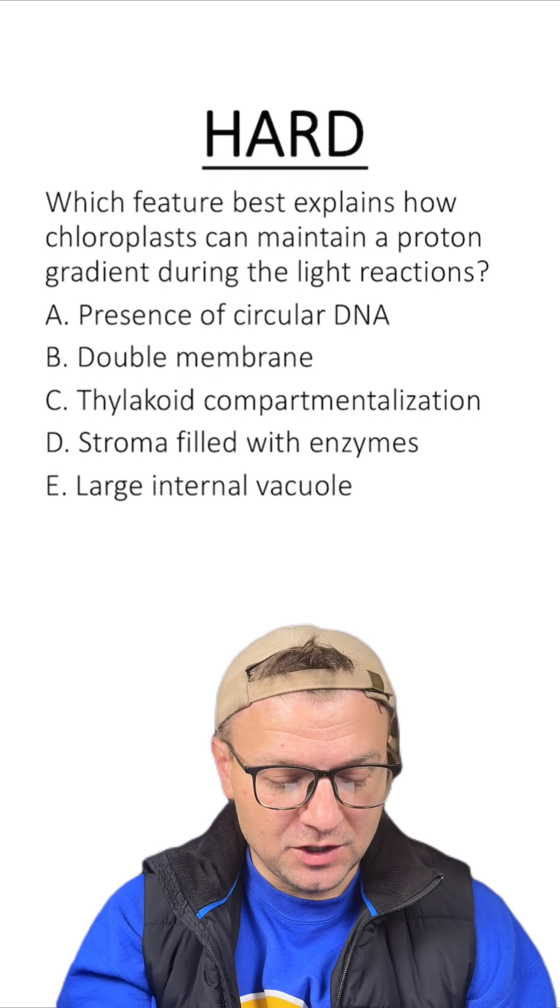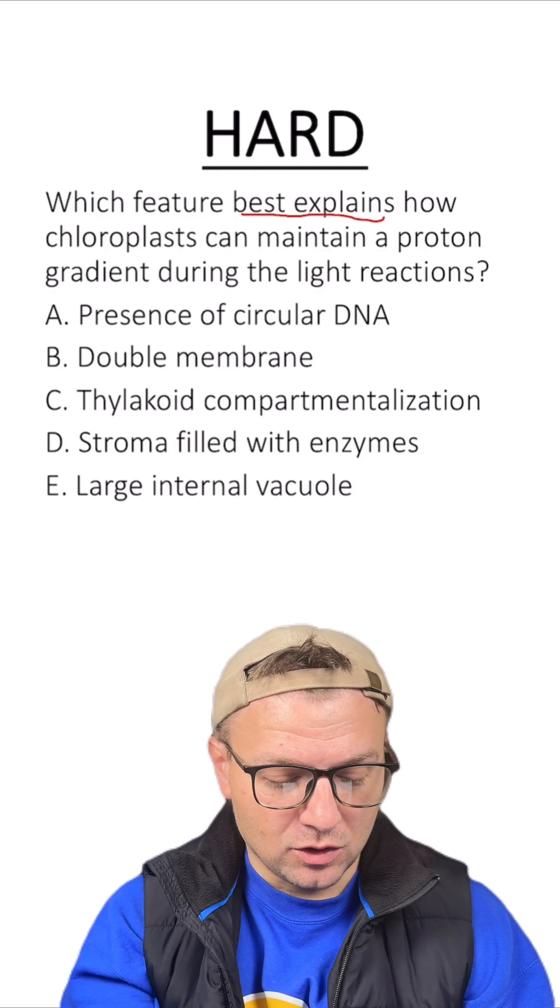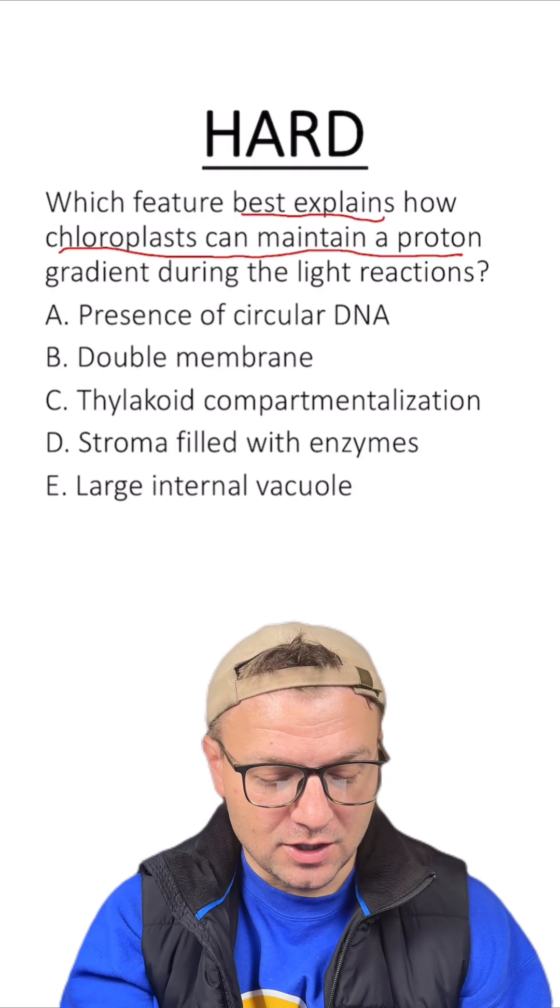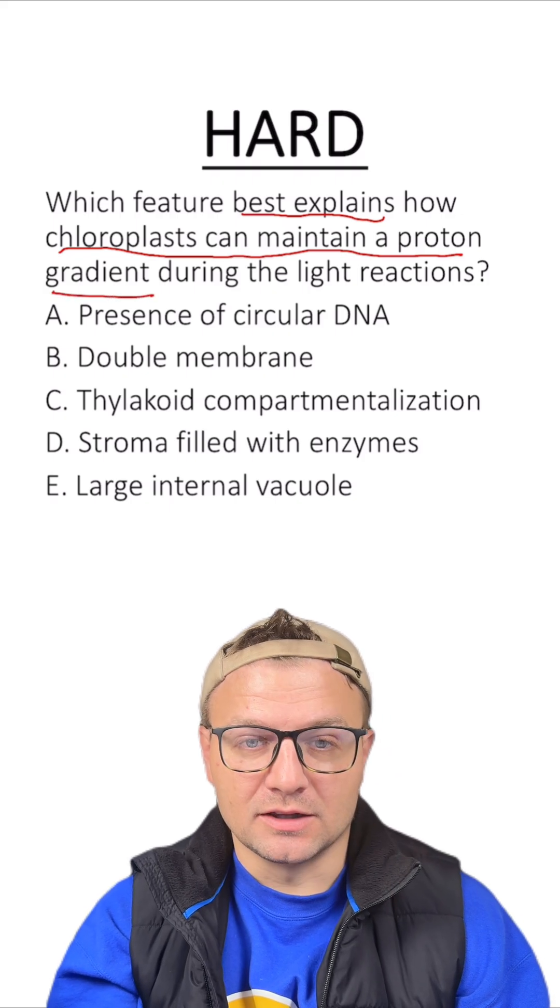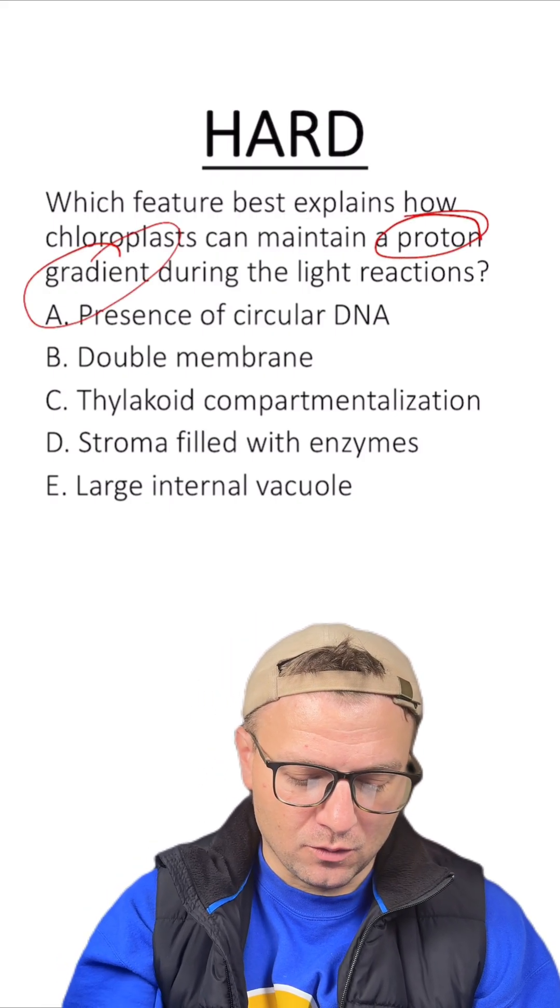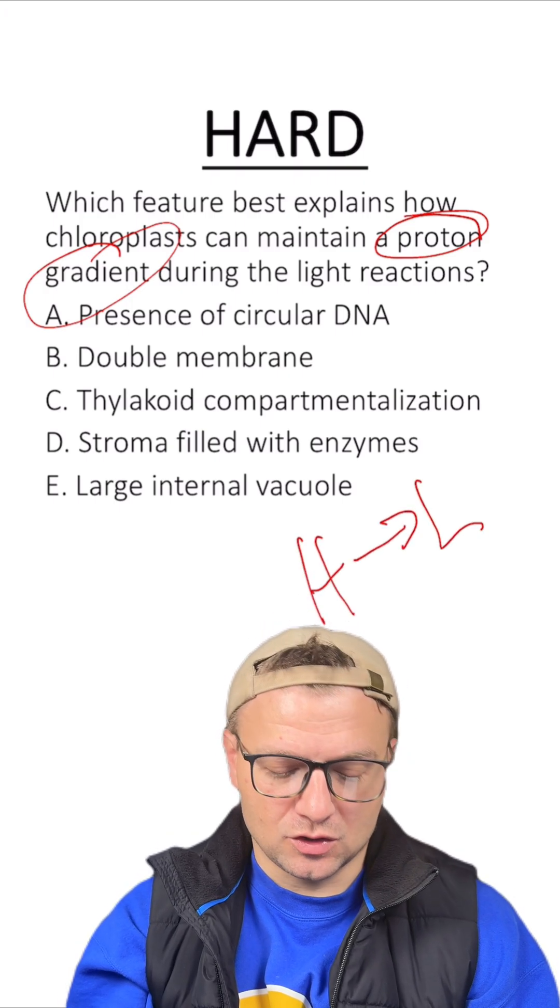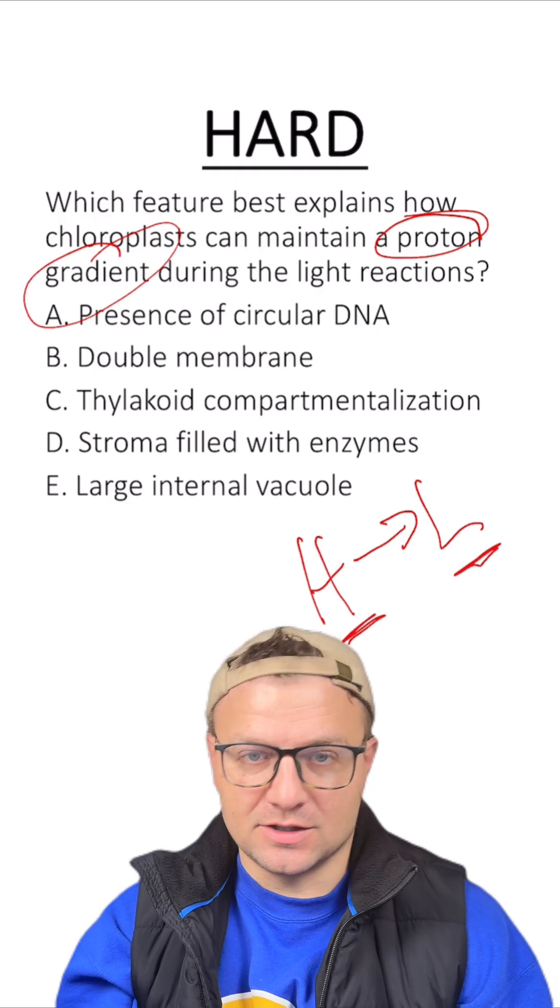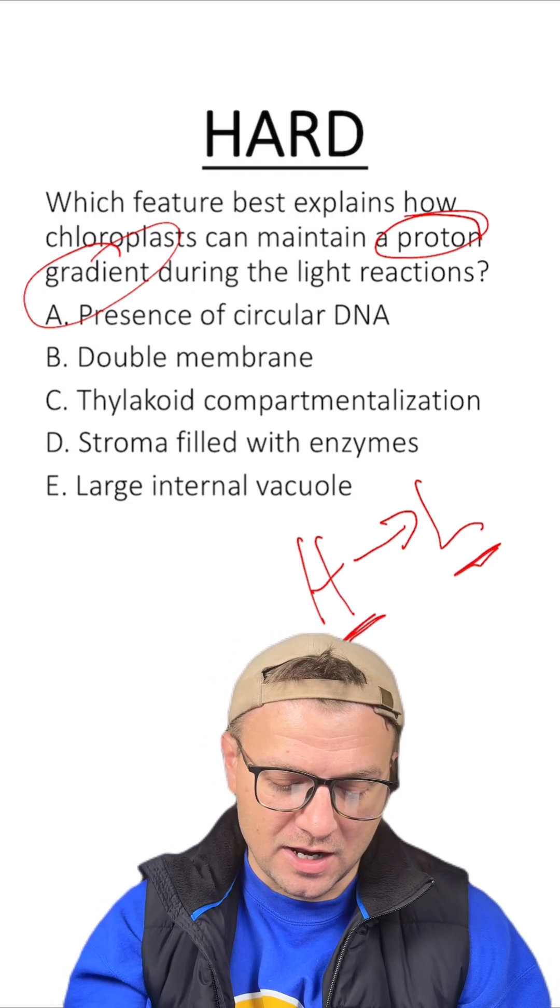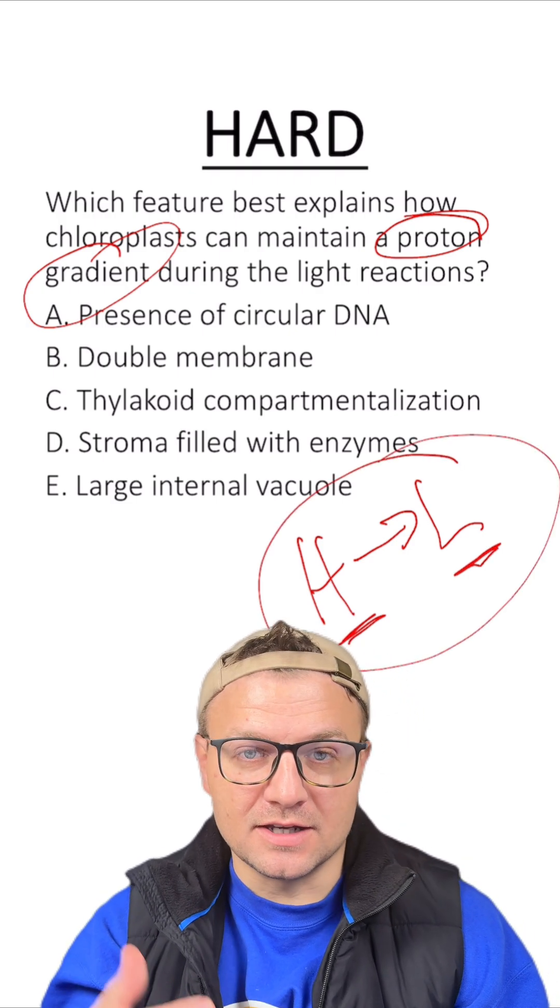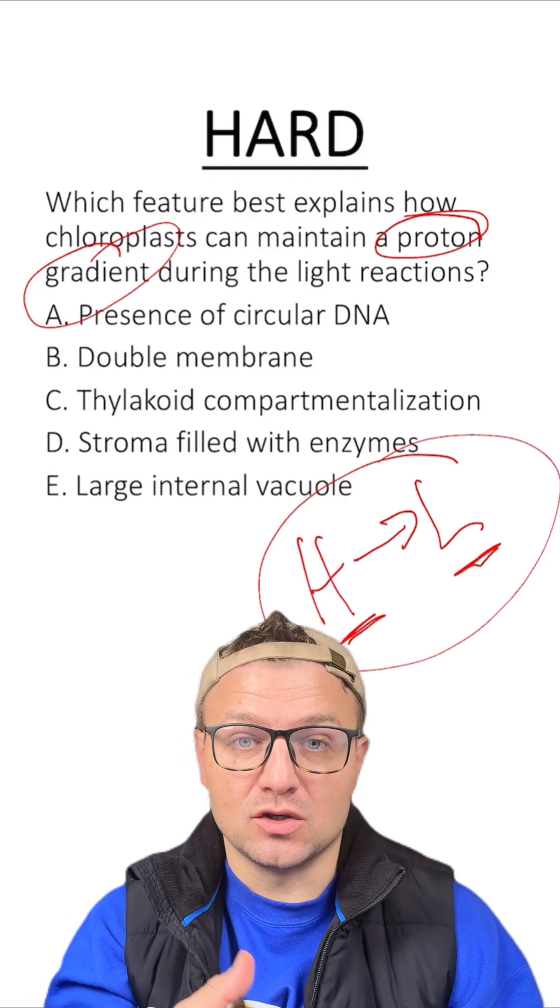Here's a hard question. Which feature best explains how chloroplasts can maintain a proton gradient during the light reactions? Remember when we're talking about this proton gradient, we're talking about going from a high concentration to a low concentration. That is what that gradient is looking at. We're talking about how does this chloroplast achieve these two different concentrations.